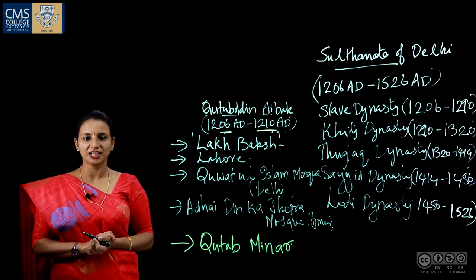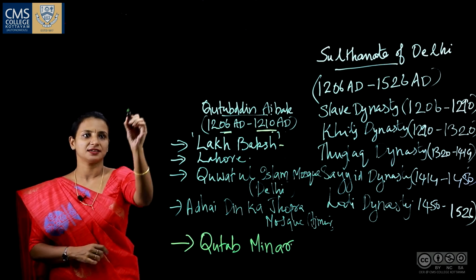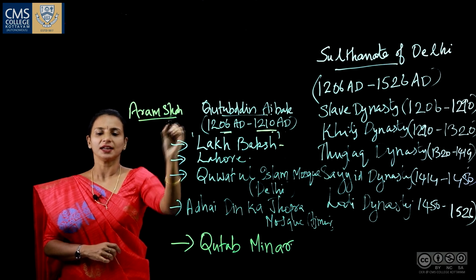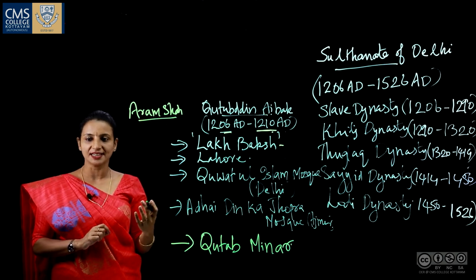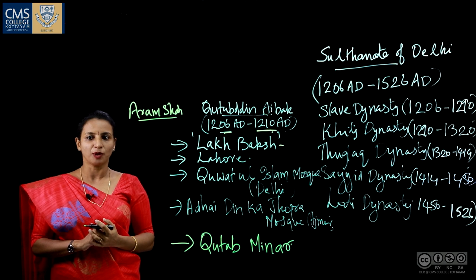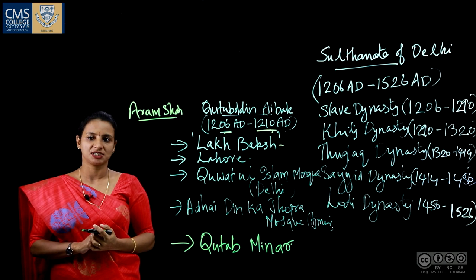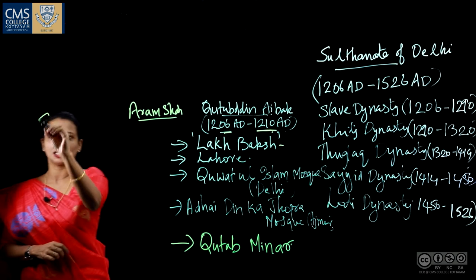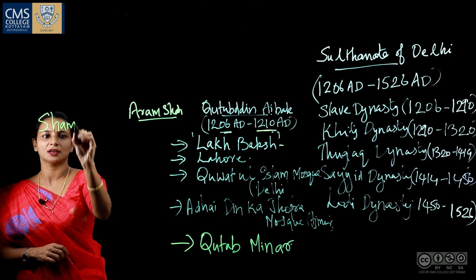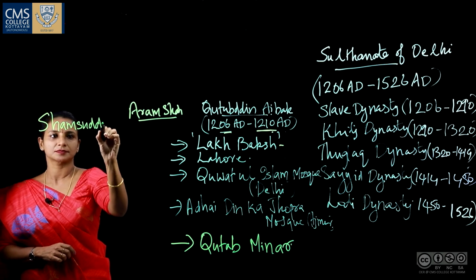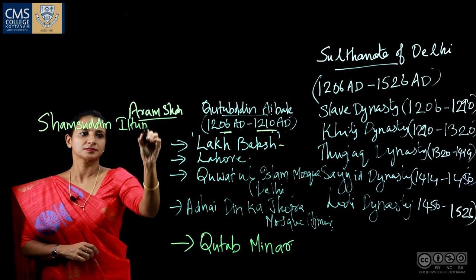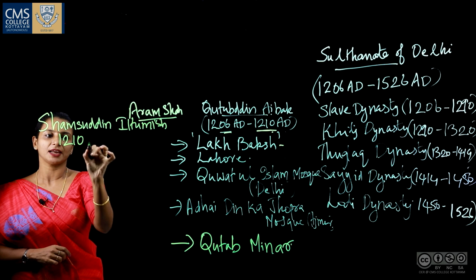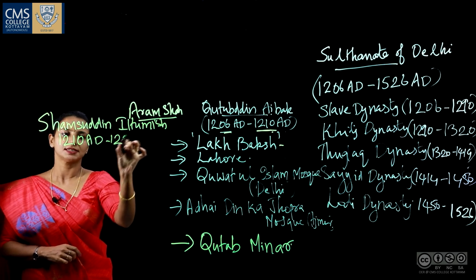The immediate successor of Qutbuddin Aibak was Aram Shah, but he was a very weak ruler and was immediately succeeded by another important ruler, Shamsuddin Iltimish. Iltimish was also a slave and was the son-in-law of Qutbuddin Aibak. He ruled India from 1210 AD to 1236 AD.